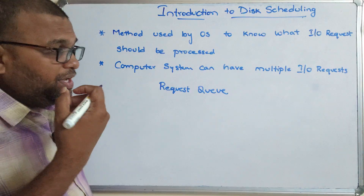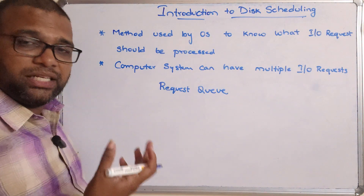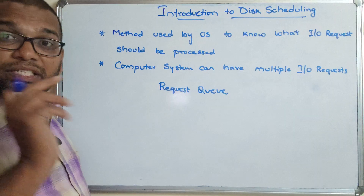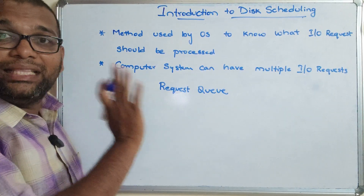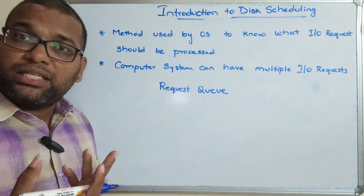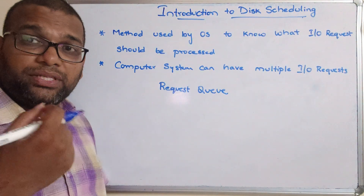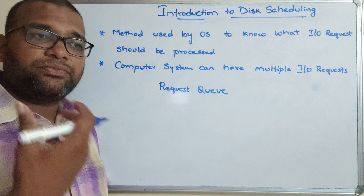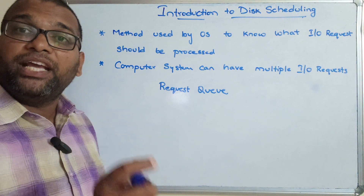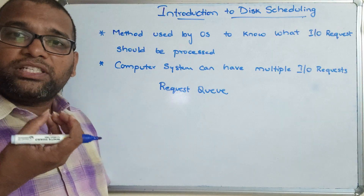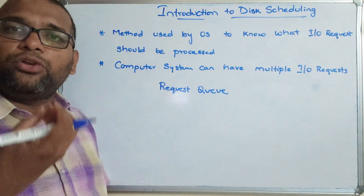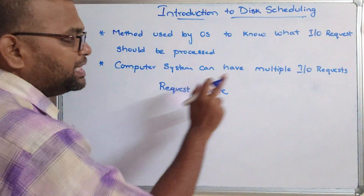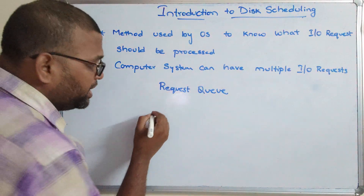If all the requests are processed in a random manner, there might be a chance of starvation. This is similar to our process scheduling algorithms. In a multiprocessing environment, multiple processes can exist but the CPU executes one process at a time. We discussed how the CPU is assigned to each process, and in that context we also saw the starvation problem — one problem that occurs in disk scheduling as well.